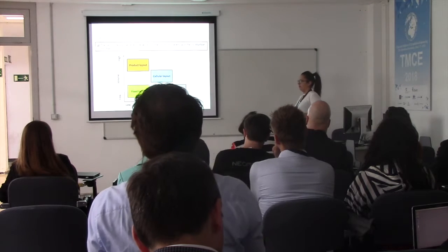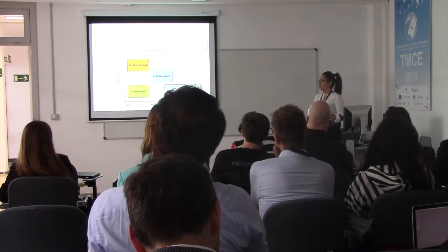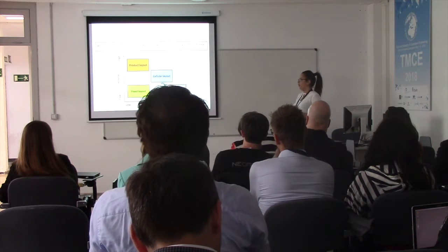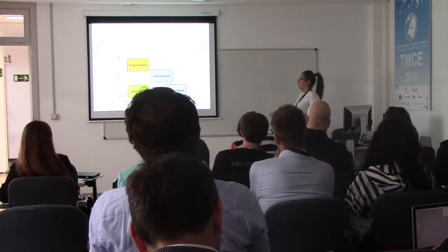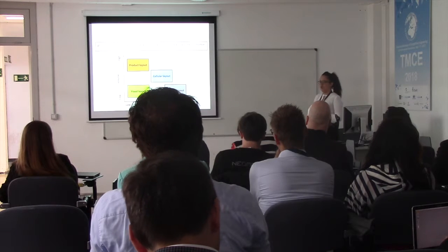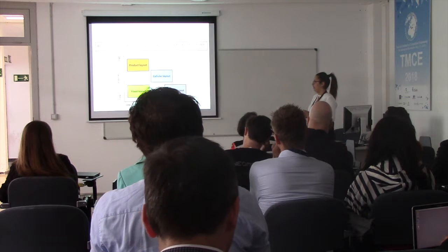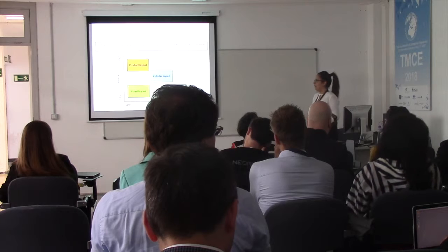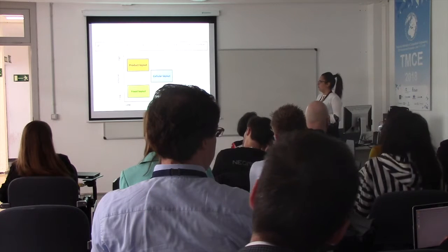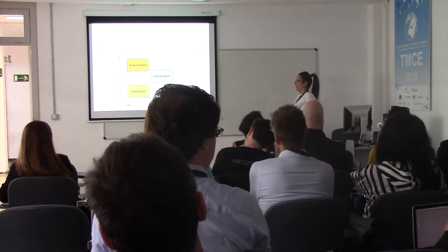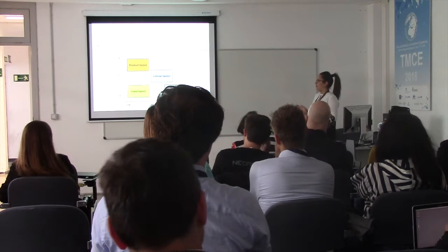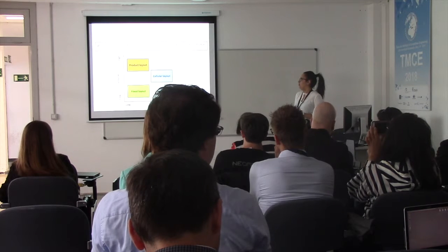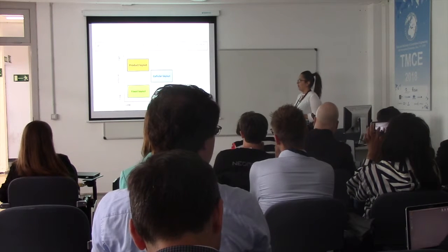In the fixed layout, the product doesn't move; it is the different resources that move to perform the operations on the product. Process layout groups facilities which have similar functions together. In the cellular layout, facilities are grouped into cells to process families of similar parts. And finally, in the product layout, the facilities are arranged according to the successive sequence of manufacturing operations.